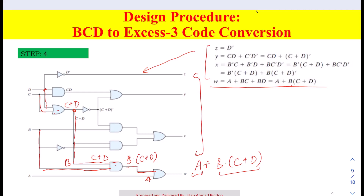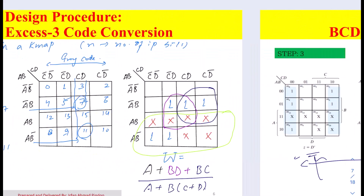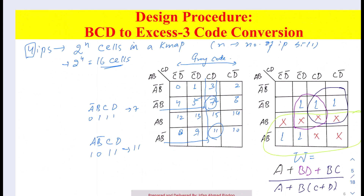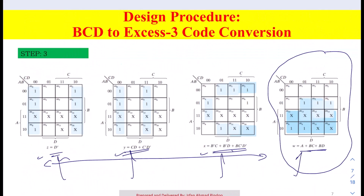This is how we implement questions based on the four important steps: determine inputs and outputs, design the truth table, simplify with K-maps, and create the circuit. Whenever a question is given, just follow these four steps. Keep revising this topic until you are clear, and if you have any doubts ask in the comment section. See you in the next class — take care and have a nice day.